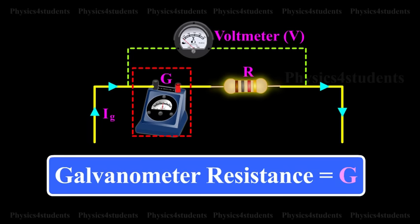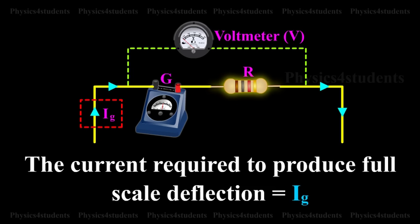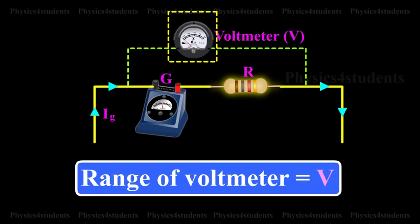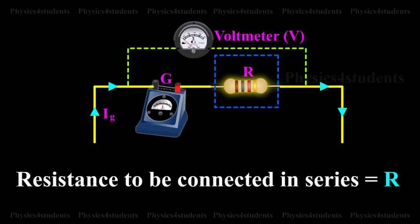Galvanometer resistance is equal to G. The current required to produce full-scale deflection in the galvanometer is equal to IG. Range of voltmeter is equal to V. Resistance to be connected in series is equal to R.